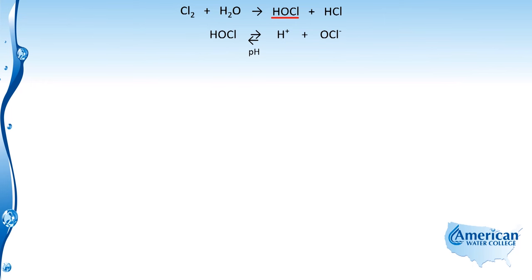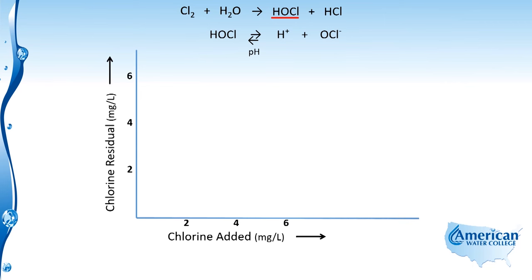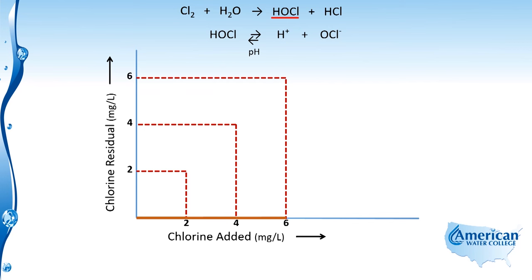Since there are no impurities in pure water for chlorine to react with, we expect our measured chlorine residual to equal the amount of chlorine added. For example, if we add chlorine at a dose of two milligrams per liter, we would expect a two milligram per liter residual. This also holds true if we increase the chlorine to four or six milligrams per liter — there's a linear, direct relationship between the amount of chlorine added and the residual that remains in solution.